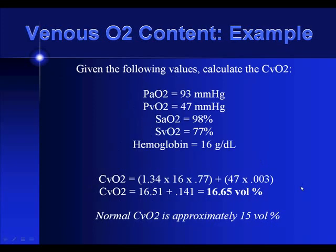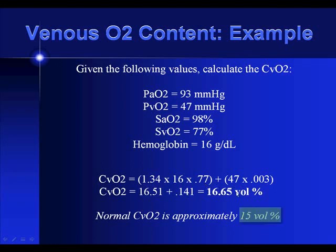Now let's calculate venous O2 content using the same formula. In this case, we use the PVO2 of 47 and the SVO2 of 77%. Putting in those two different variables and calculating it out gives us approximately 16.65.